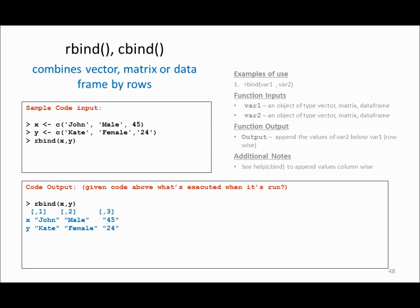Another function is called rbind or cbind, which combines columns and rows with each other. For example, I have a vector called x with some values, and another vector called y with its own values. If I want to combine these two variables in the form of rows I can say rbind(x, y) and the output is a data frame containing two rows, x and y. Using this function you can join multiple rows to form one data frame.